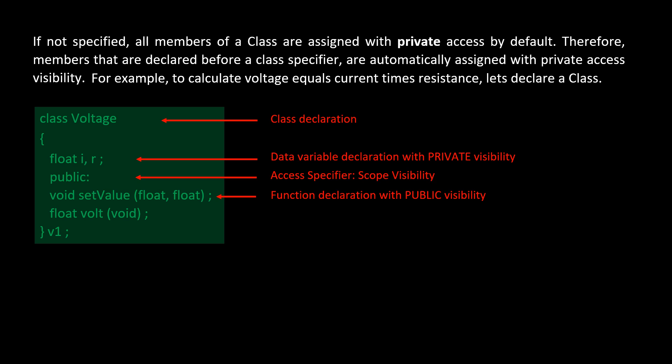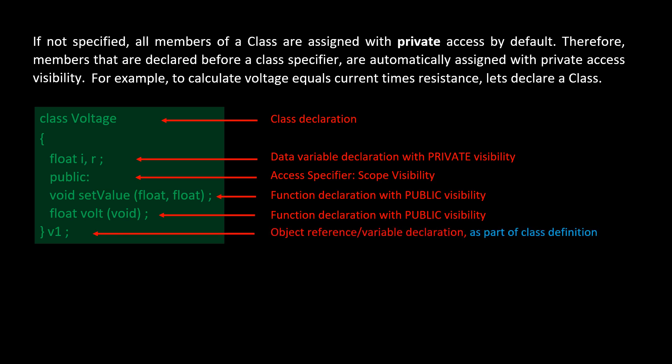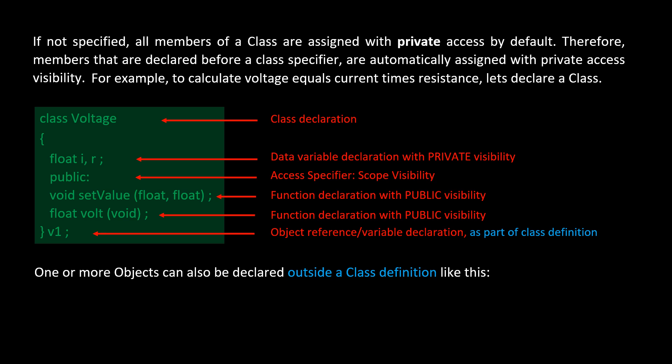The function named 'set_value' with public visibility carries two float variables as parameters and returns no value. Another function named 'volt' with public visibility carries no variables as parameters and returns one float value. The object reference is declared as part of the class definition. One or more objects can also be declared outside a class definition, like 'voltage v1, v2', where 'voltage' is the class and v1 and v2 are the objects we create.